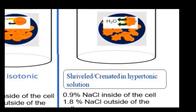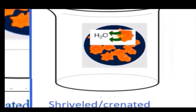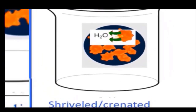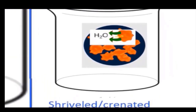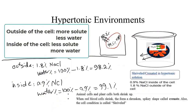On the other hand, when you place a red blood cell in a hypertonic solution, water leaves the cell and the net flow of water will be out of the cell. As a result, the cell will shrink and the cell condition is called shriveled or crenated.